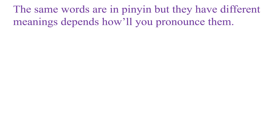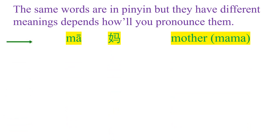So the same word in pinyin, but they have different meanings depending on how you pronounce them. This one — what kind of tone is that? It's a flat tone. Will you please read this? MA. If you pronounce that as MA, meaning that is 'mother' or 'mama.' This is the simplified Chinese character for that.